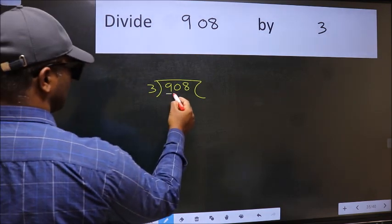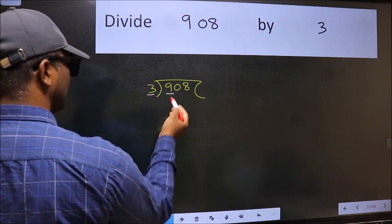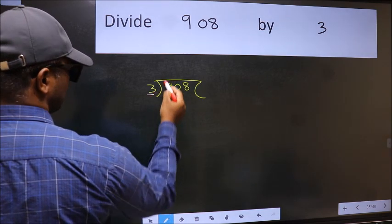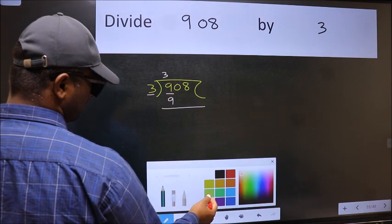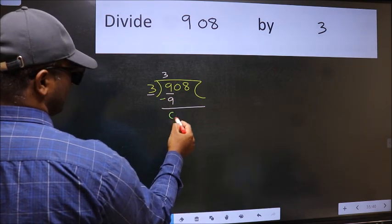Here we have 9 and here 3. When do we get 9 in the 3 table? 3 times 3 is 9. Now we should subtract. We get 0.